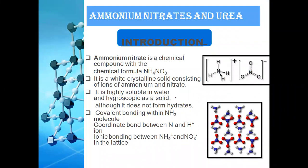Ammonium nitrate is a chemical compound with the chemical formula NH4NO3. As we can see from this diagram, it has two ions: the ammonium ion and the nitrate ion. It is a white crystalline solid consisting of ammonium and nitrate ions. Ammonium nitrate is highly soluble in water and hygroscopic in nature, meaning it can absorb moisture from the environment, but it does not form hydrates.